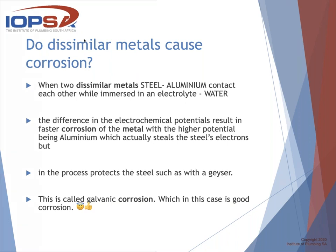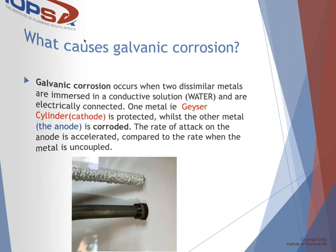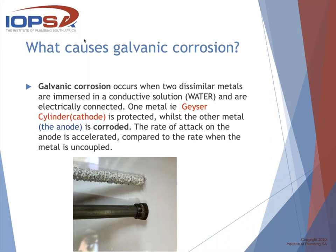What causes galvanic corrosion? Galvanic corrosion occurs when two dissimilar metals are immersed in a conductive solution like water and are electrically connected. One metal — for instance, the geyser cylinder cathode (positive) — is protected, while the other metal, the anode, is corroded. The rate of attack on the anode is accelerated compared to when the metal is uncoupled. Looking at a sacrificial anode: the blue arrow shows a typical brand-new anode, bright and shiny; the red arrow shows a depleted anode; and the purple arrow shows it completely depleted.